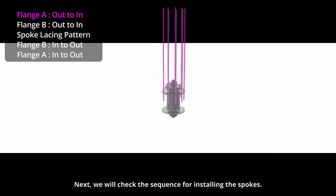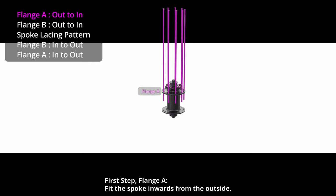Next, we will check the sequence for installing the spokes. First step, flange A. Fit the spoke inwards from the outside.